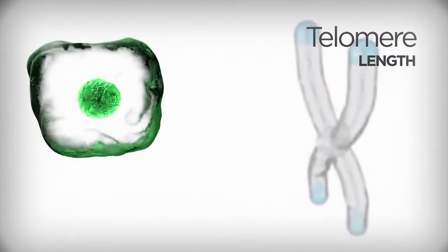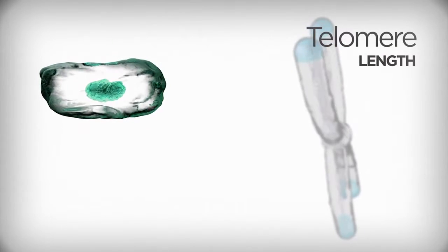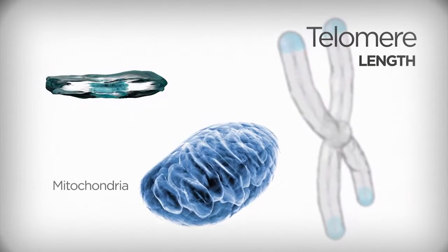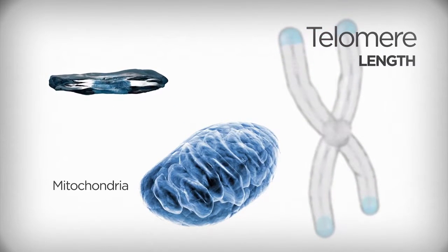Short telomeres initiate a cascade of harmful events in the cell that affect other subcellular organelles, such as mitochondria, the energy factory for our cells.